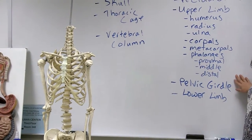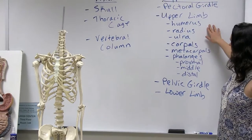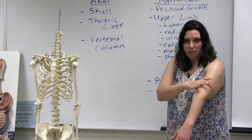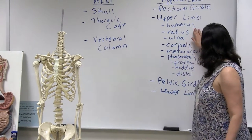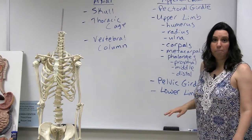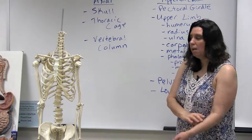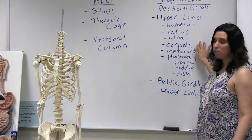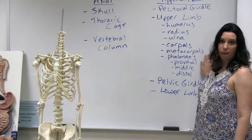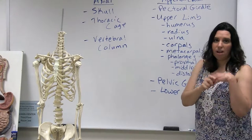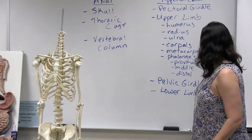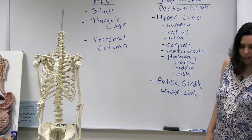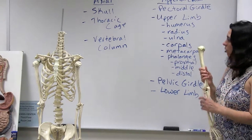The upper limb consists of the bone of the arm, which is the humerus; the radius and the ulna, which are the two main bones in the forearm; the bones of the wrist called the carpals; the bones of the hand called the metacarpals; and then the bones of the fingers, the phalanges. So let's start off by talking about the humerus.